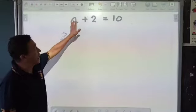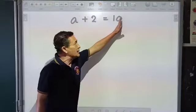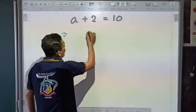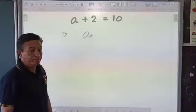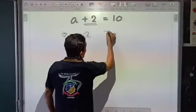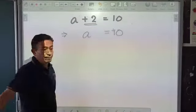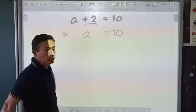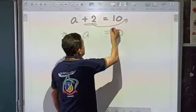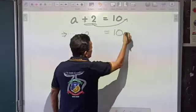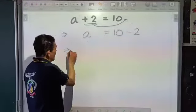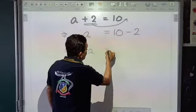On the left hand side I have a plus 2. On the right hand side I have 10. My idea is to leave a alone on the left hand side, which means I have to remove this plus 2. I already have a 10 here. So what do I do with this plus 2? It moves from the left hand side to the right hand side. Since it is being added here, it is subtracted on the other side. So a will be equal to 8.